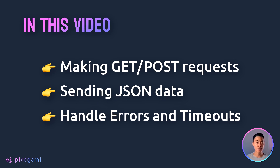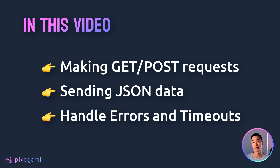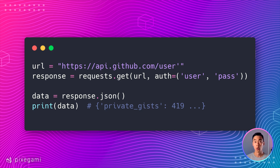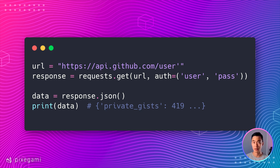This includes making GET and POST requests to websites, sending Python objects as JSON data, and how you can handle common HTTP errors or timeouts if your request is taking too long. We're going to go through all of that using really simple hands-on examples. So let's go ahead and get started.